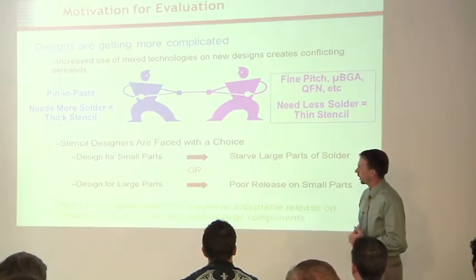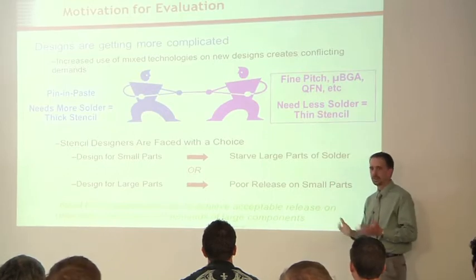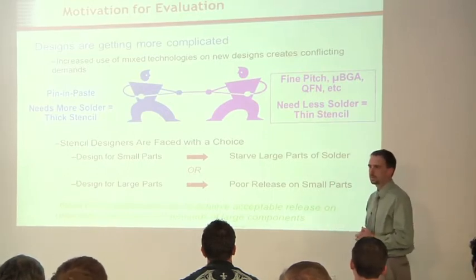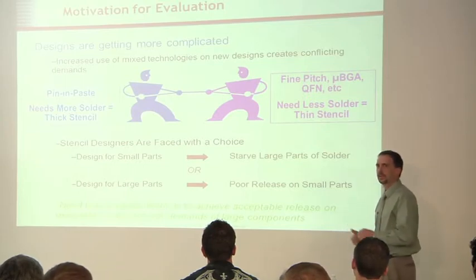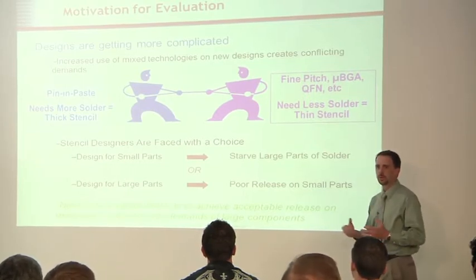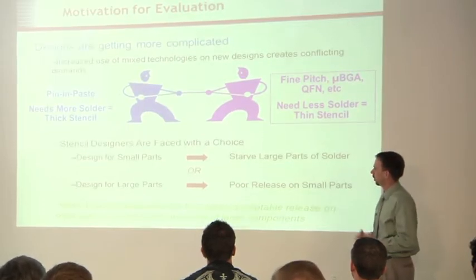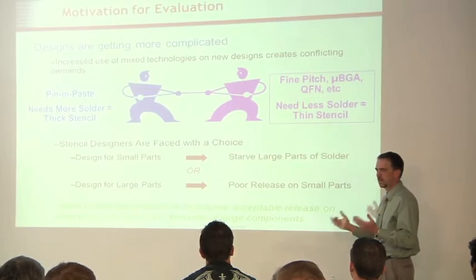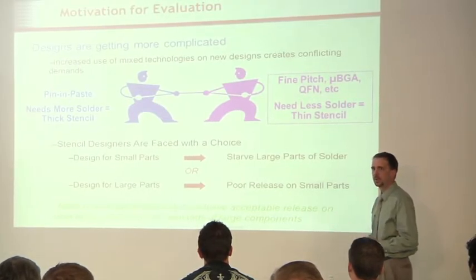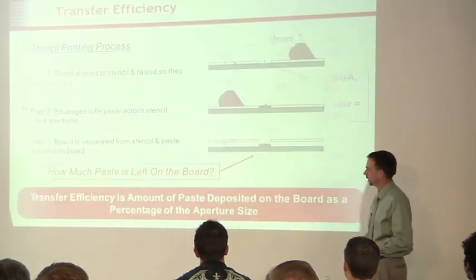So often stencil designers are faced with a choice. Do I design for the small parts? If I do that, then I run the risk of starving these big parts of solder. Or do I design for the large parts? And if I do that, then we run into problems with consistency on the print of the really small parts. So what we did internally was kicked off this project. We need to investigate some methods to achieve acceptable results on both. How do we kind of balance these two competing requirements?